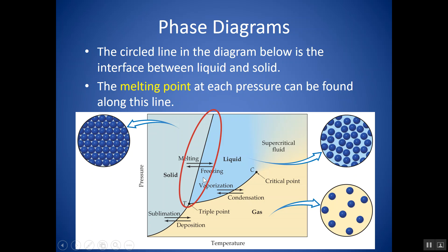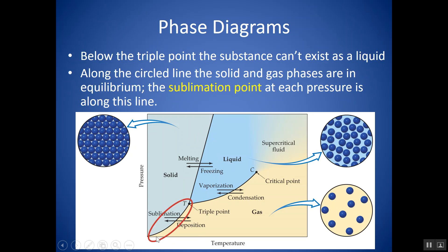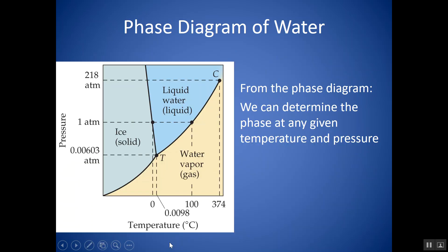The line between solid and liquid represents all the melting points for that substance at different pressures. If you have the pressure, go to this line and drop down to find the melting point — you can do that for any pressure. Down here, the line going between solid and gas lets you find the sublimation point. Go across, drop down, and you can find it at any pressure.